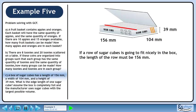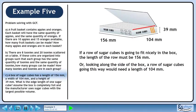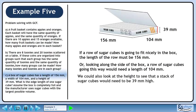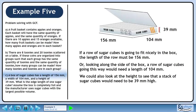If a row of sugar cubes is going to fit nicely in the box, the length of the row must be 156 mm. Or, looking along the side of the box, a row of sugar cubes going this way would need a length of 104 mm. We could also look at the height to see that a stack of sugar cubes would need to be 39 mm high.